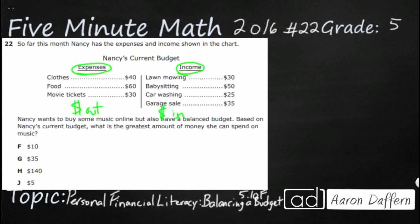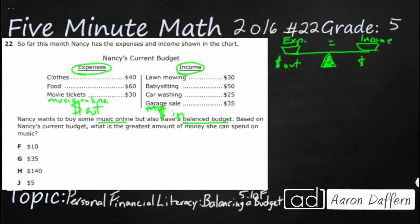She has a budget, but she needs to maintain at least a balanced budget. She wants to buy some music online, so she wants to add that right here into her expenses — music online — but she doesn't know how much money she can spend. This idea of a balanced budget comes from the idea of a balance scale in science class. We're looking for expenses — that's your money out — to match your income. When those two are equal, that is a completely balanced budget.